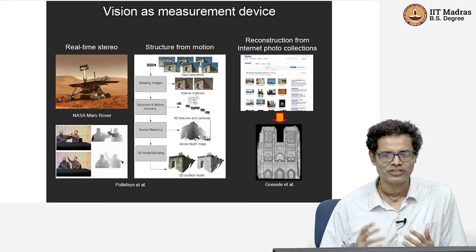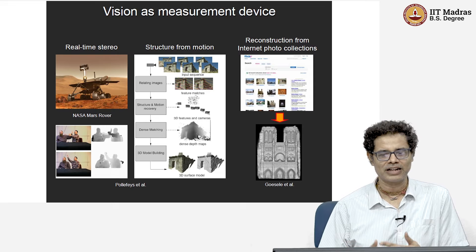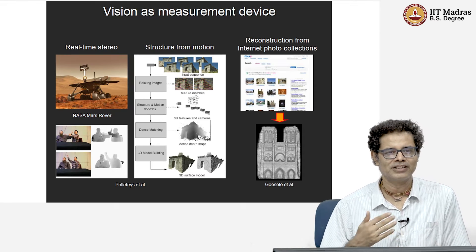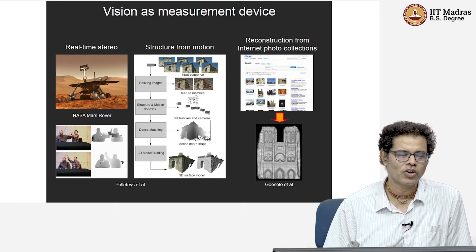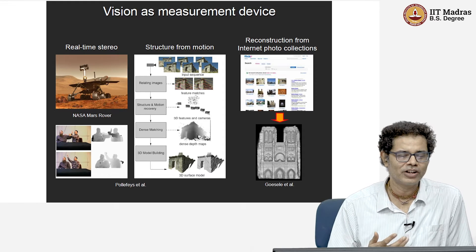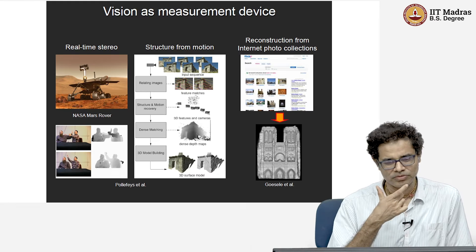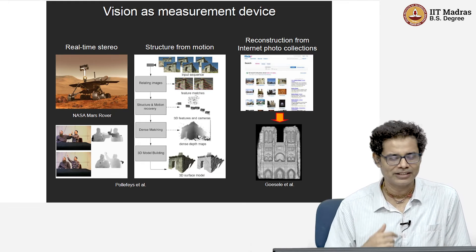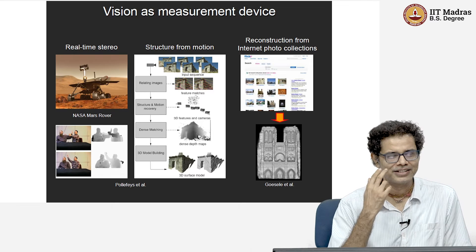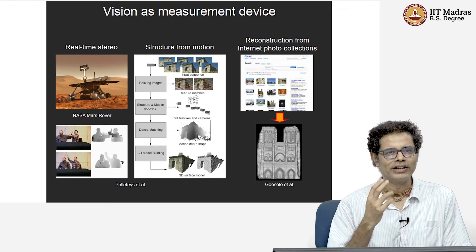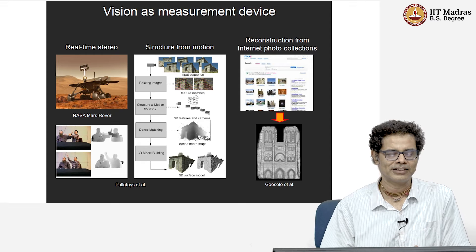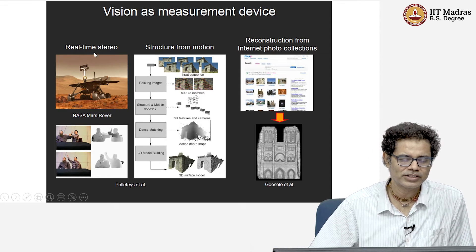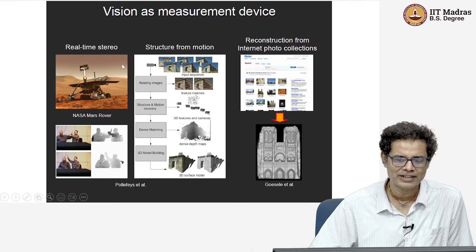On the other hand, we can also use vision as a measurement device. For example, if I want to measure the distance of objects, the usual way of doing it is stereo — we take two cameras and look at the scene, and from there we can get the depth. Our eyes are also stereo because we have two eyes, and therefore we can extract depth. Stereo is the most popular way for extracting depth.